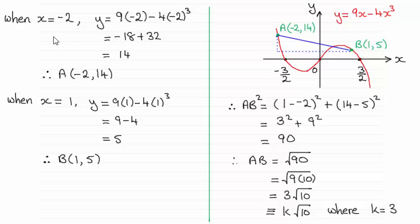So all I've done is substituted x equals minus 2 to get the corresponding y-value, and you can see it turns out to be 14. And the same with x equaling 1, substituted into the equation for y, and that gives us 5.